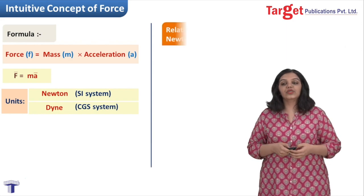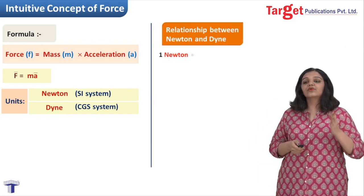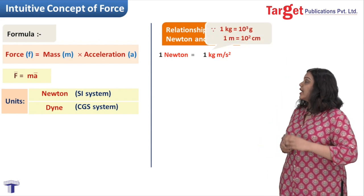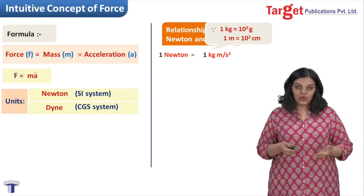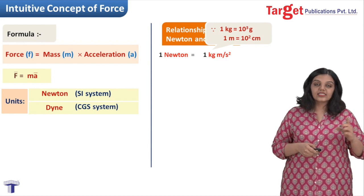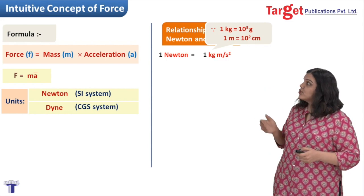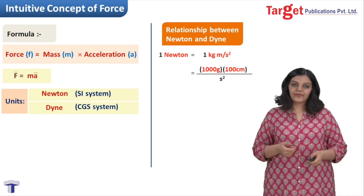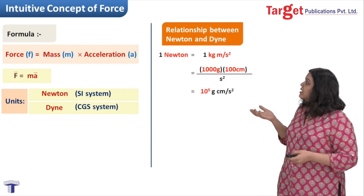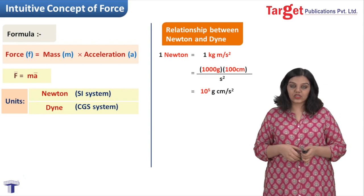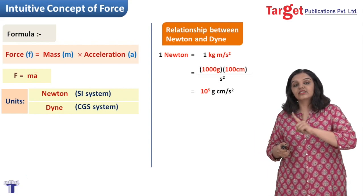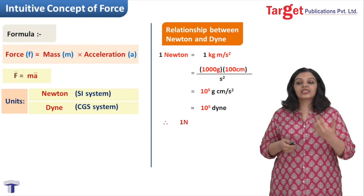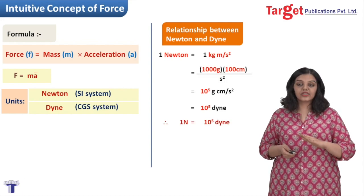Let's see what the relationship is between newton and dyne. One newton is equal to one kg meter per second squared. One kg is 1000 grams, that is 10 to the power 3 grams, and one meter is 100 centimeters, that is 10 to the power 2 centimeters. Substituting, one newton equals 1000 grams into 100 centimeters divided by second squared, which gives us 10 to the power 5 gram centimeter per second squared. Since gram centimeter per second squared means dyne, one newton equals 10 to the power 5 dyne. This is the relationship between the SI and CGS units of force.